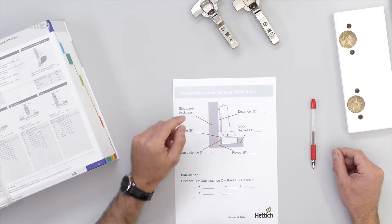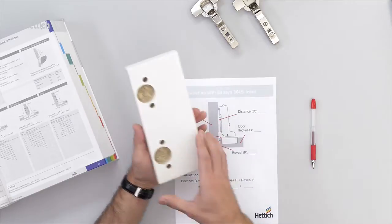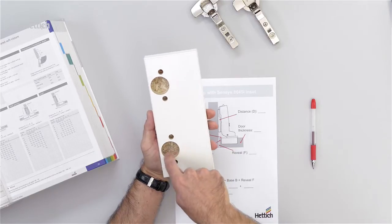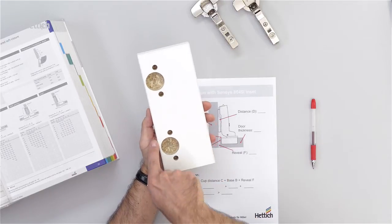The value shows the cup distance C, which is the distance between the cup hole drilling and the edge of the door.